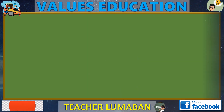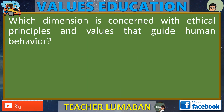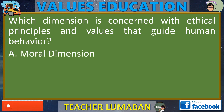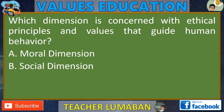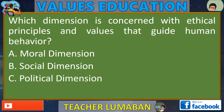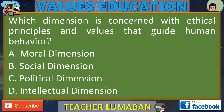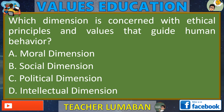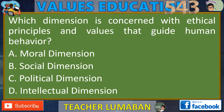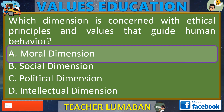Which dimension is concerned with ethical principles and values that guide human behavior? Letter A: Moral Dimension. Letter B: Social Dimension. Letter C: Political Dimension. Letter D: Intellectual Dimension. In the next 5 seconds, select the best response from the available options. The correct answer is A, Moral Dimension.